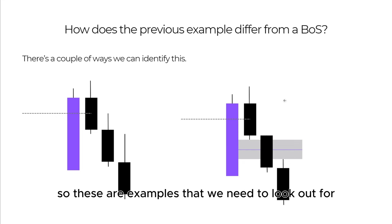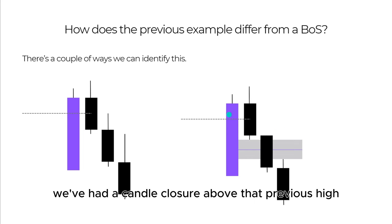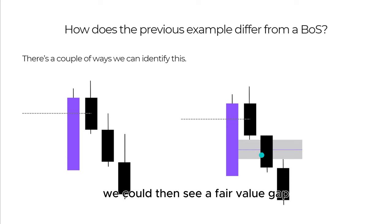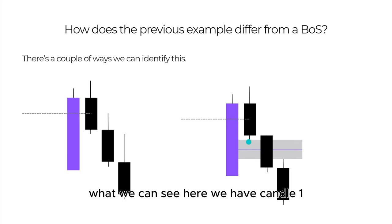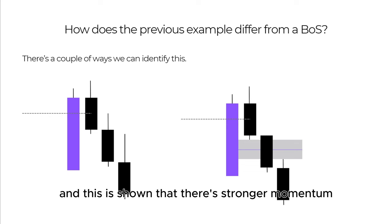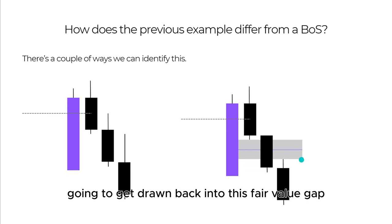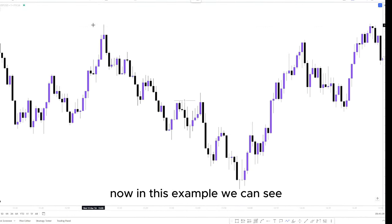These are examples to look out for when we see a potential break of structure. In this example on the right, we've had a candle closure above that previous high, then a bearish candle, and the very next candle shows a fair value gap — which we'll cover in more detail in another video. We have candle one, candle two, and candle three; candle one's low and candle three's high have a gap between them. This is the fair value gap, showing stronger momentum pushing away after taking that previous high, and price is likely going to get drawn back into this fair value gap at some point.